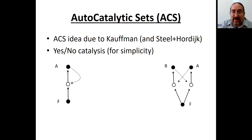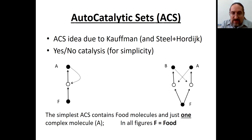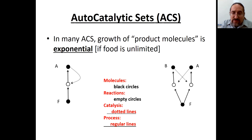On the left side you see only one molecule, A. There is food, which exists in as much quantity as we want. The process is described by the empty circle, with two lines into the process and outside the process from food to A. Catalysis is shown with a dotted line. On the right side you see two molecules, A and B, each catalyzing the formation of the other from the food molecules. Black circles are molecules, reactions are empty circles, dotted lines represent catalysis, and process lines are the standard lines.